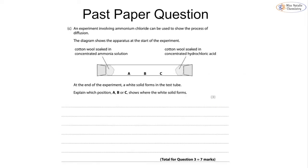An experiment involving ammonium chloride can be used to show the process of diffusion. The diagram shows the apparatus at the start of the experiment, and we want to show where A, B, and C will form. This is linking back to topic 1A, but we can still answer this question based on what we know. We have ammonia solution and hydrochloric acid, and we know that our white solid is going to form as the ammonium chloride. We want to figure out where it's going to form. Well, it's actually going to form at position C.